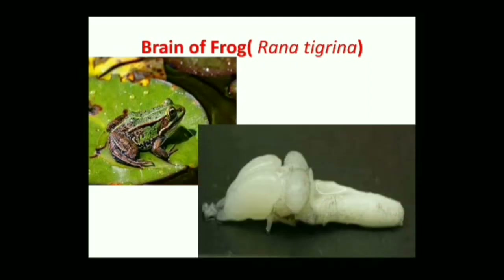I am here to explain the next system of frog, that is the nervous system. The nervous system consists of three parts: CNS, PNS, and ANS. CNS stands for central nervous system, PNS stands for peripheral nervous system, and ANS stands for autonomic nervous system.